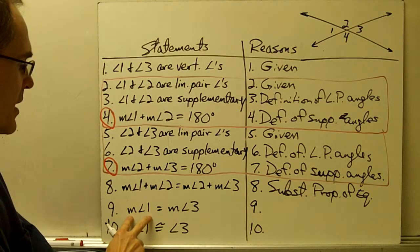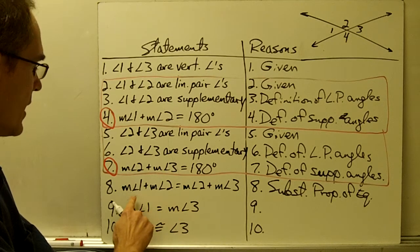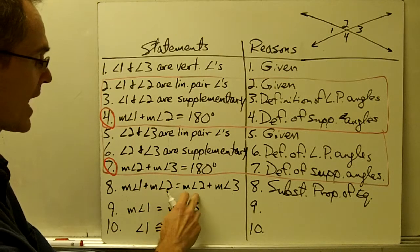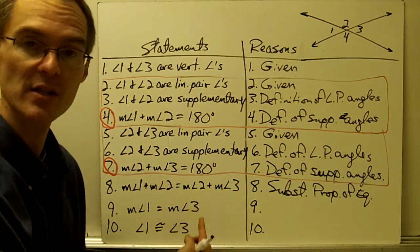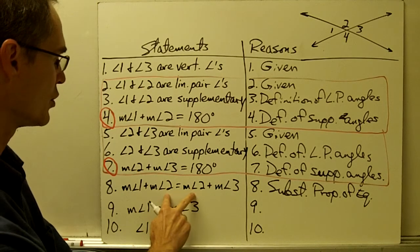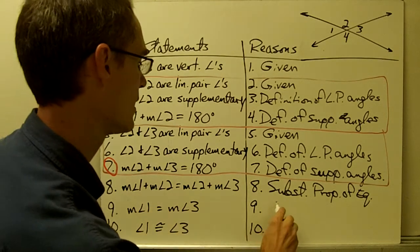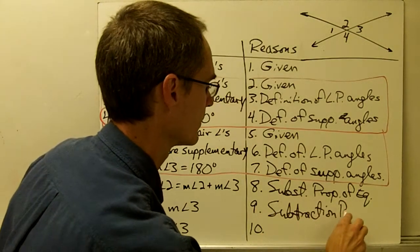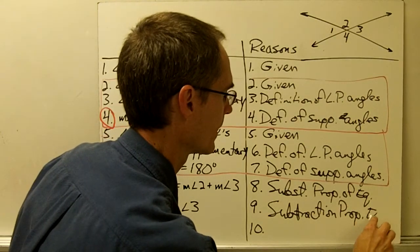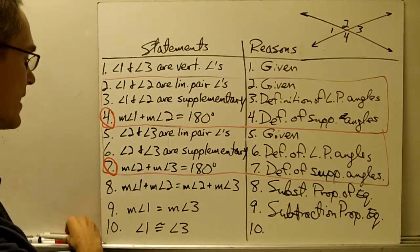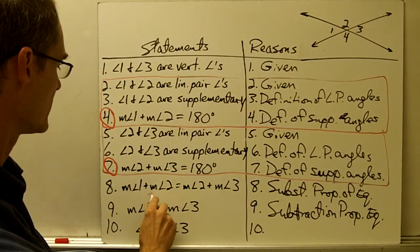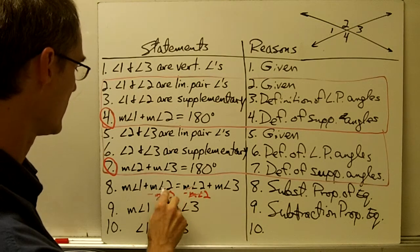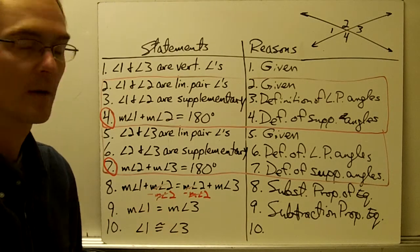Statement 9: the measure of angle 1 equals the measure of angle 3. From statement 8, if I subtract the measure of angle 2 from both sides of the equation, the measure of angle 2 goes away on both sides, and I'm left with m∠1 = m∠3. That is the subtraction property of equality.